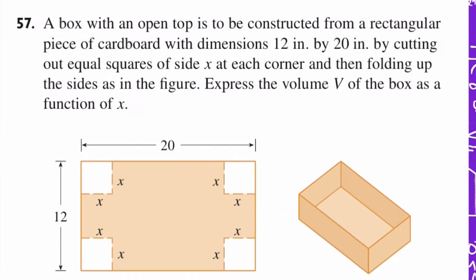A box with an open top is to be constructed from a rectangular piece of cardboard with dimensions 12 in by 20 in by cutting out equal squares of side x at each corner and then folding up the sides as in the figure. Express the volume V of the box as a function of x.